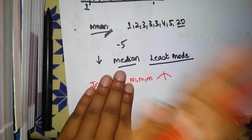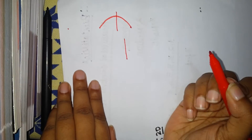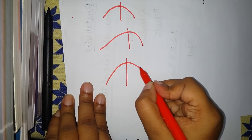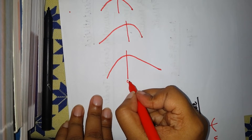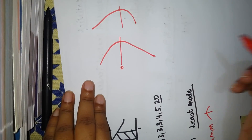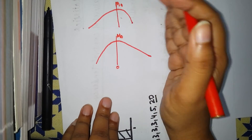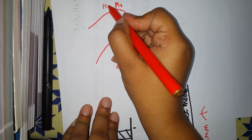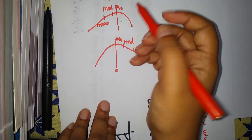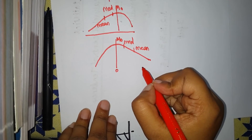When there is one extreme negative value, the curve shifts accordingly — this is called negative skewness. When there is one extreme positive value, the curve shifts the other way — this is called positive skewness. The mode, being the most repeated value, always stays at the peak of the curve. Median gets slightly shifted, and mean gets affected the most.